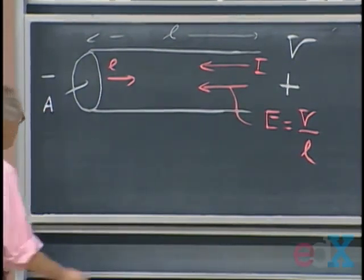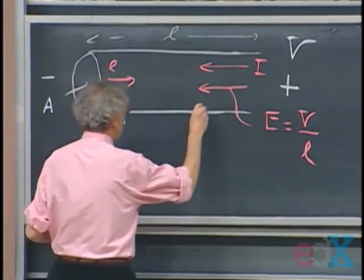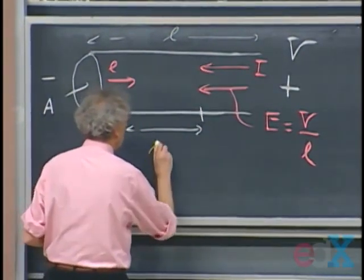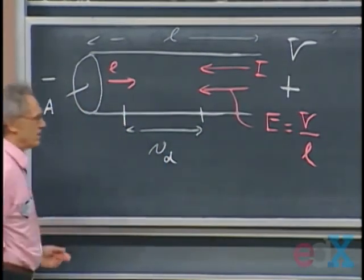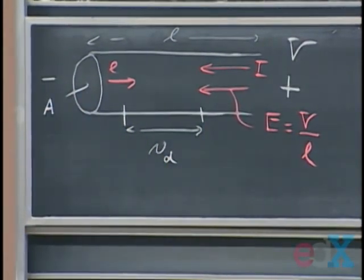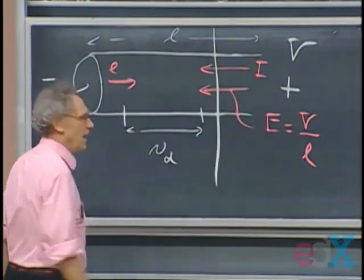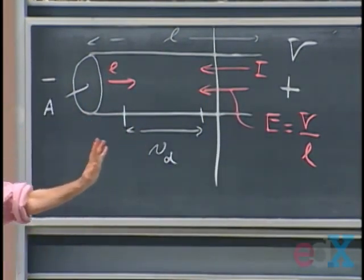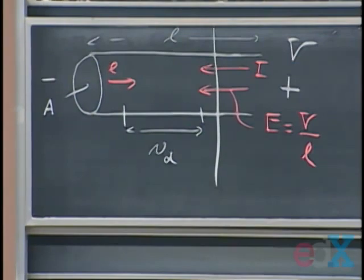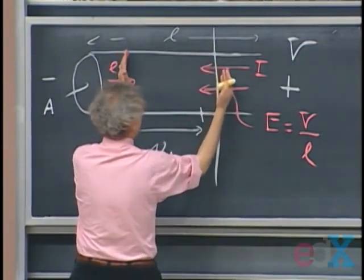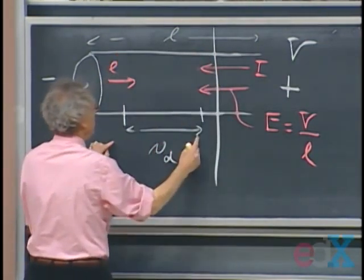In one second, these three electrons will move from left to right over a distance Vd meters. So if I make any cross-section through this wire anywhere, I can calculate how many electrons pass through that cross-section in one second. In one second, the volume that passes through here, the volume is Vd times A.